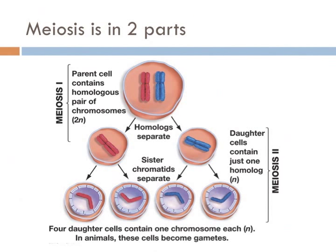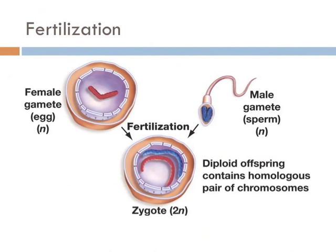In meiosis II, those sister chromatids in the daughter cells separate from each other. The cells produced in meiosis II also have one of each type of chromosome, but this time the chromosomes are unreplicated. So meiosis reduces the number of chromosomes in half, so that two different versions of the chromosomes can reunite to produce a new organism — a process known as fertilization.